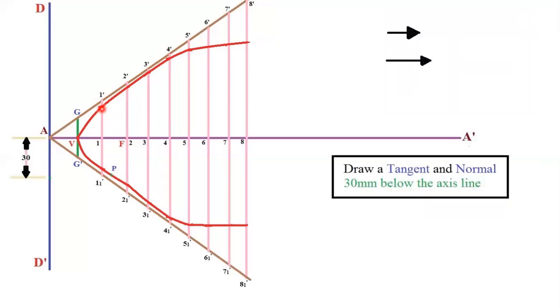Next step is, we need to mark tangent and normal. Draw tangent and normal 30mm below the axis line. This is the axis line, take 30mm and keep your point here. Try to mark a distance from the axis line 30mm below. Keep your point. Now place your scale in horizontal distance and this scale will be touching the curve at a particular point and that point is called P. This point P will be 30mm away from the axis line.